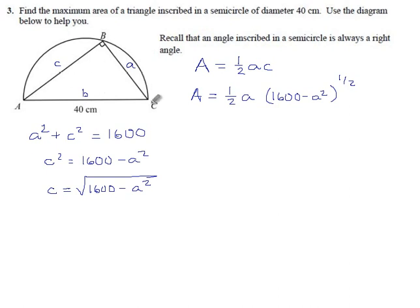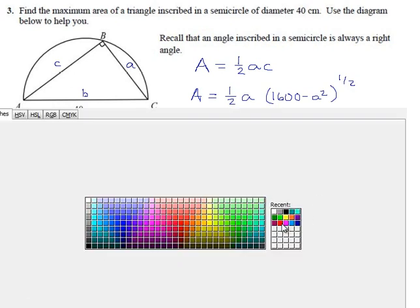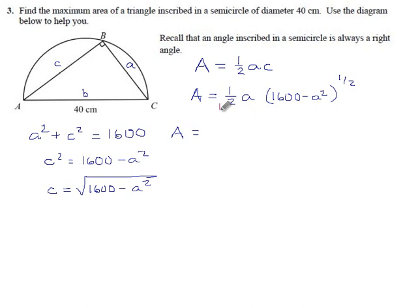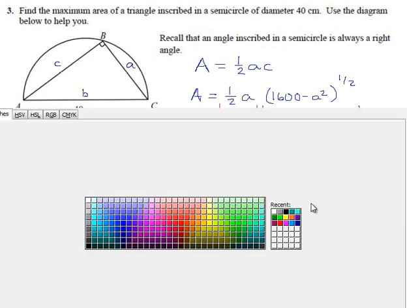And then we have to clean it up and when we're done we'll solve it, we'll find its critical values. So away we go. First derivative of second would be one-half, 1600 minus a squared to the minus one-half, and then the chain rule kicks in here.